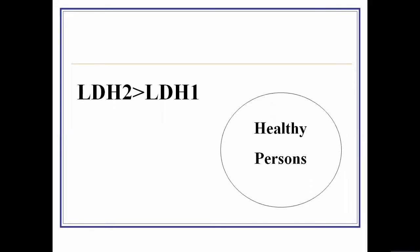In normal healthy individuals, among the isoenzymes of LDH, the LDH2 value is greater than that of LDH1. These isoenzymes are present inside different tissues, and most specifically, they are found in the heart and red blood cells (RBCs).